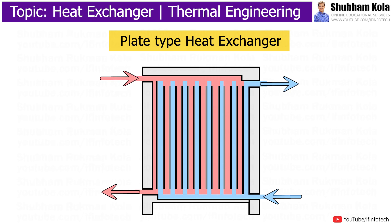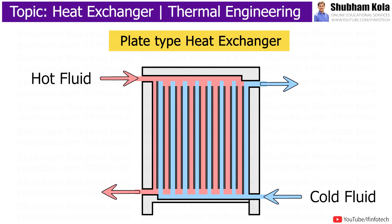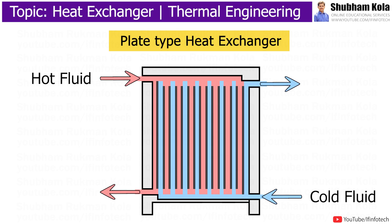Inside the plate type heat exchanger, heat transfer occurs through the plates. The plate absorbs heat from the hot medium and transfers it to the cold medium. The cold medium becomes hot through this heat transfer via flat plates. These heat exchangers are more compact and sometimes less costly than shell and tube type heat exchangers.